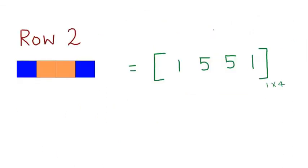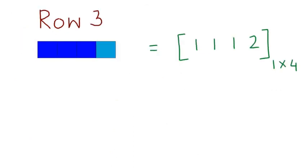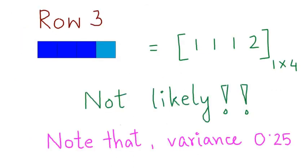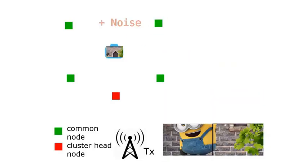Now Row 2. This may be a principal component. How about Row 3? Row 3 looks more like the original row was corrupted by noise during transmission from the camera node to the common nodes to yield this, right?